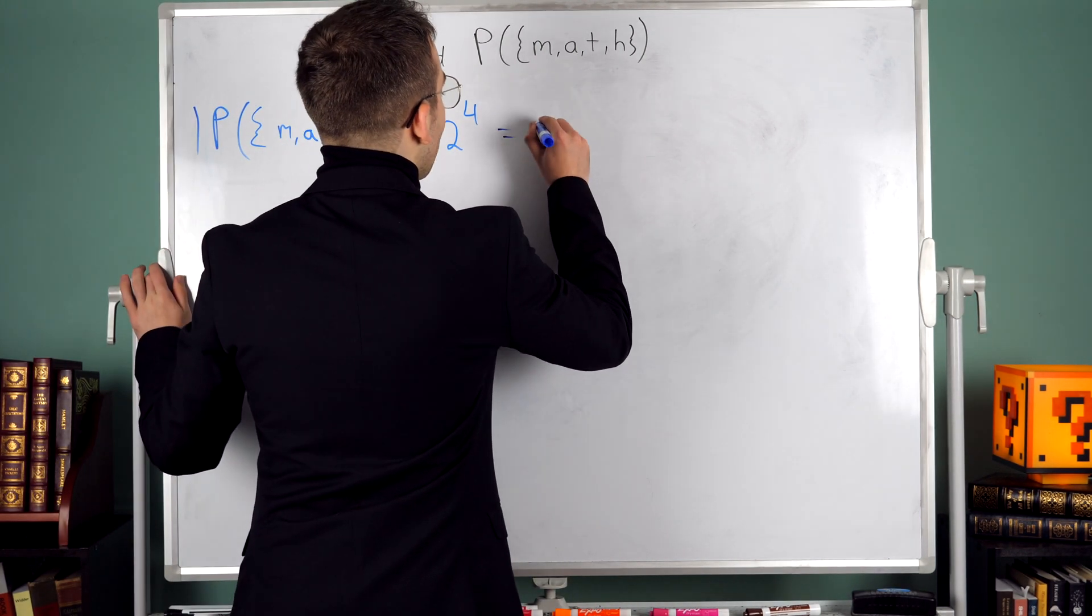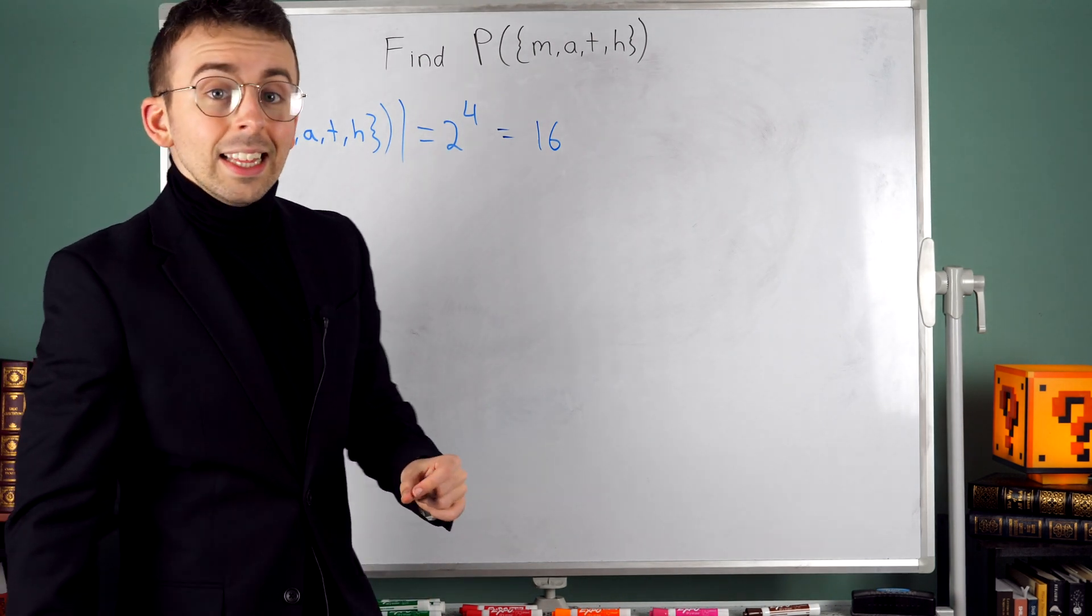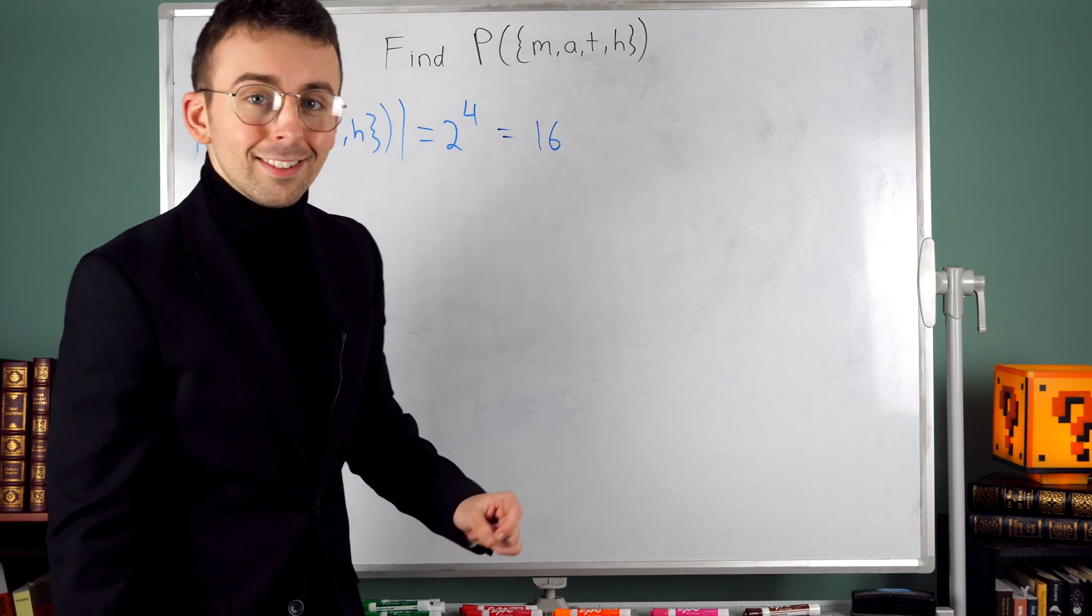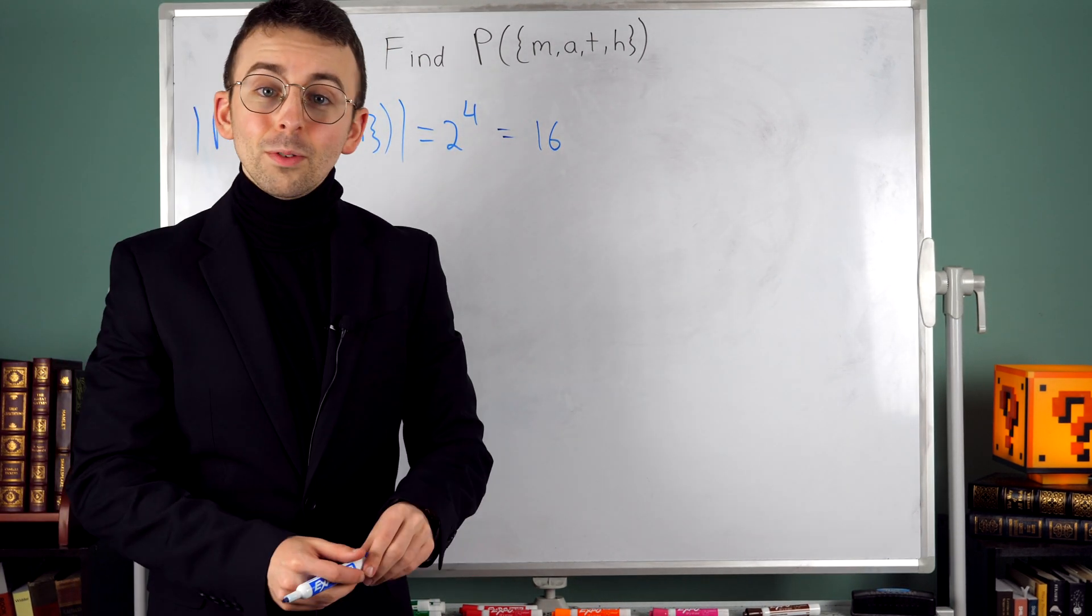2 to the power of 4, by the way, is 16, so we're in for a little bit of a painful exercise here to find all 16 of those subsets.